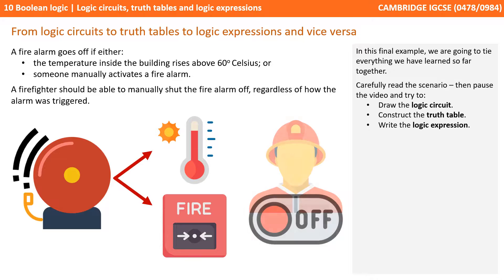In this final example, we're going to tie everything we've learned together. The scenario is: a fire alarm goes off if either the temperature inside the building rises above 60 degrees Celsius, or someone manually activates the fire alarm. A firefighter should be able to manually shut the alarm off regardless of how it was triggered. Pause the video and try drawing the logic circuit, constructing the truth table and writing the logic expression.